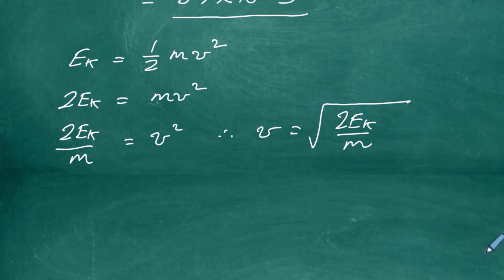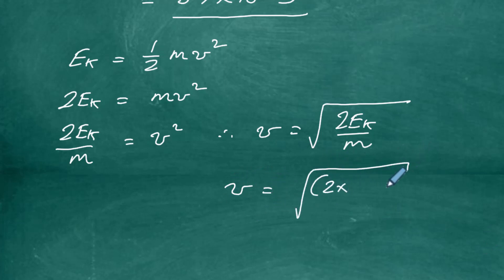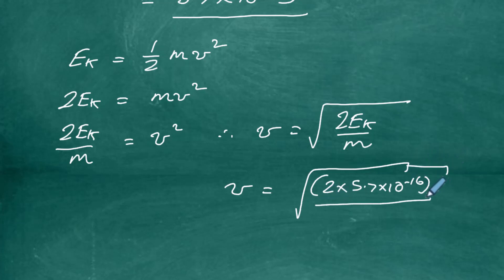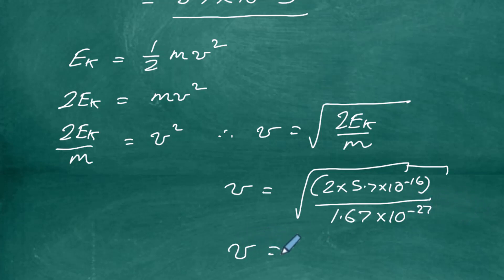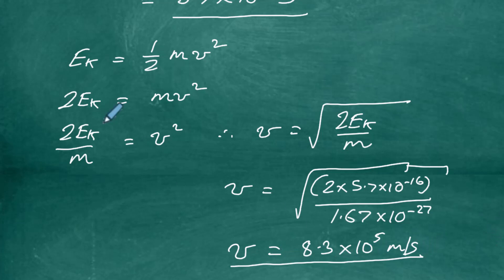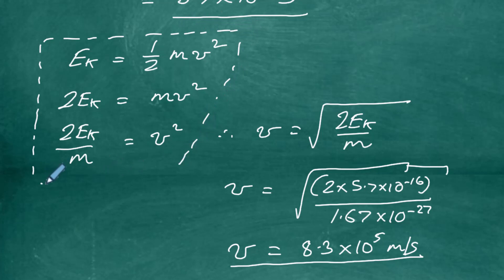Substituting the numbers: v = √(2 × 5.7×10⁻¹⁶ ÷ 1.67×10⁻²⁷). The mass of the proton from the data book is 1.67×10⁻²⁷ kilograms. Plugging this into the calculator gives v = 8.3×10⁵ meters per second — that's the speed of the proton as it reaches plate B. The key thing is to have this rearrangement well rehearsed, as they will ask you to find kinetic energy and then find the speed of the moving object.